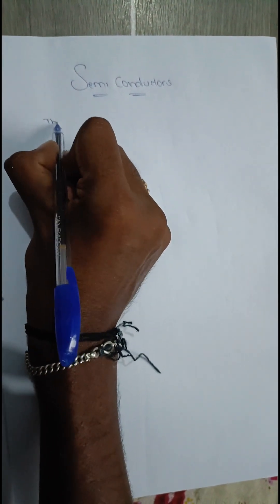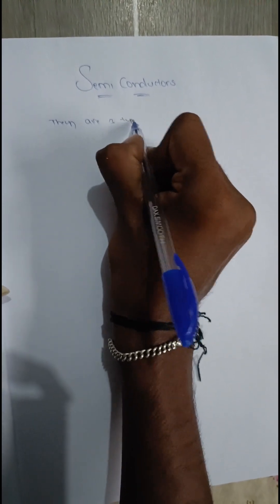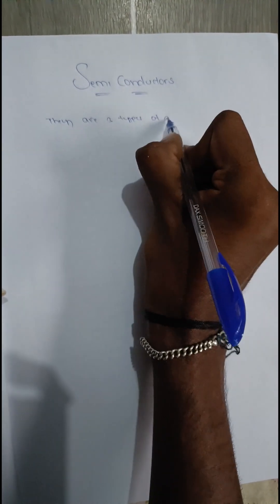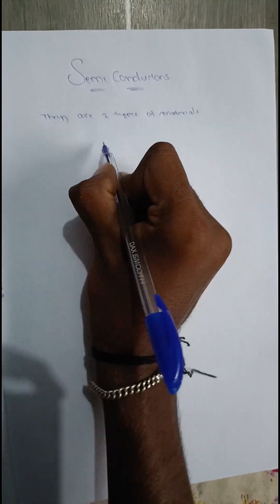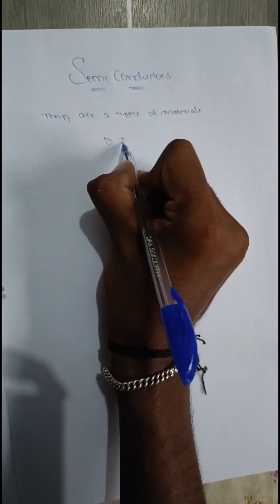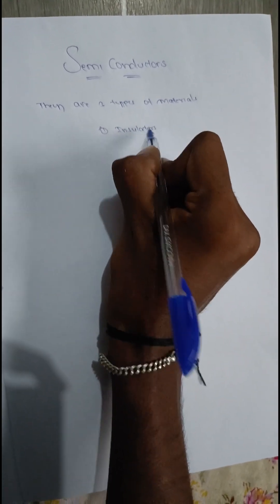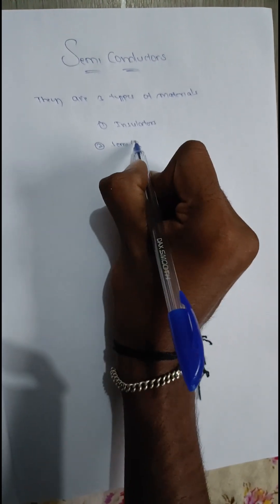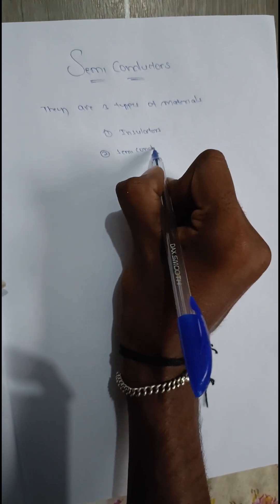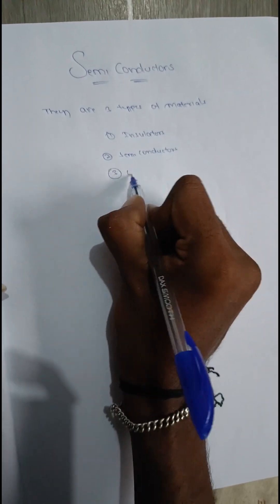There are three types of materials in our daily life. First one, insulators. Second, semiconductors. Third, conductors.